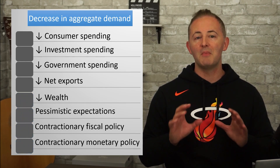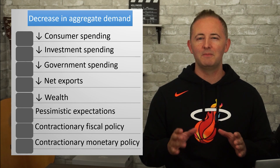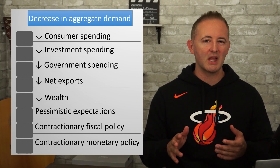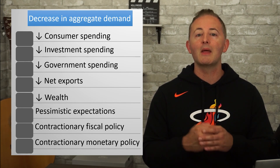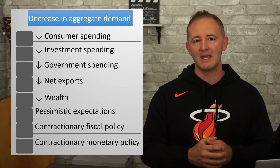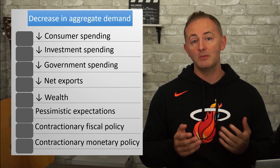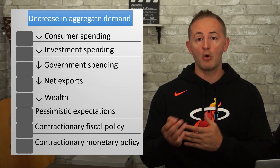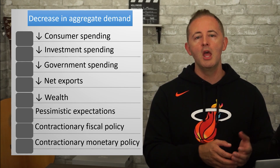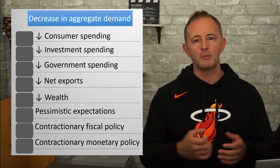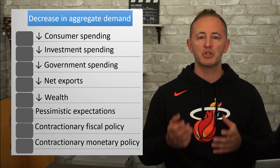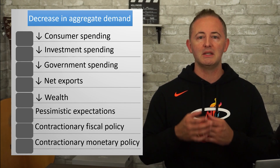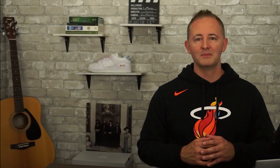There's also monetary policy, but that's Unit 4 material. It also affects AD and can be expansionary or contractionary, with expansionary policy increasing AD and contractionary policy reducing it.